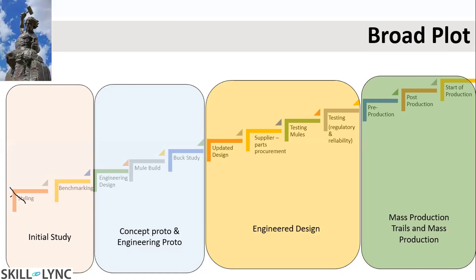You then do an updated design and involve suppliers for procurement, building testing mules. Testing mules are a representation of the design at around 90% accuracy. These testing mules will be built — say around 100 to 150 — for various experiments, and they will be released for durability testing, reliability testing, and sent for certification. After that, we do pre-production, wherein once we get the proper engineering design, we assemble it and see how the car looks.